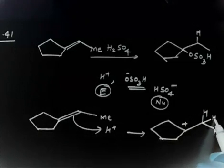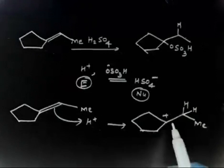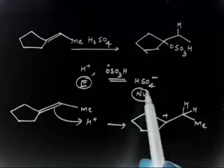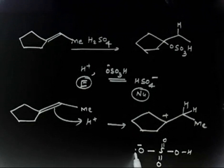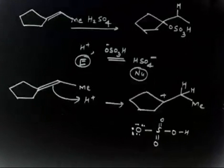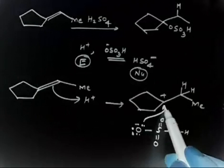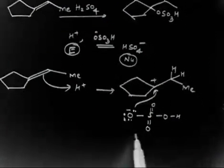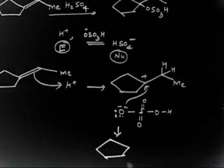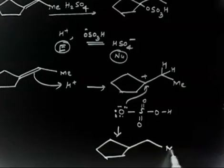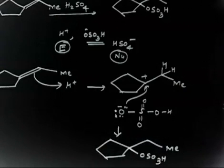Me and hydrogen are attached here. I already have one hydrogen initially. Now the next step: the nucleophile HSO₄⁻ attacks. If you see the structure of HSO₄⁻, it has lone pairs on oxygen. This lone pair attacks the carbocation, and you will get the desired product with Me and OSO₃H attached.